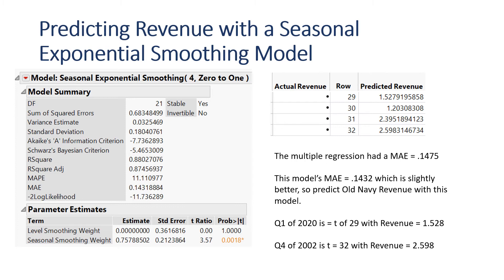Now let's try using a time series function in JMP, found under specialized modeling, called seasonal exponential smoothing. It's easy to remember — it was seasonal data, so we choose the seasonal command. The MAE here is 0.1431. When I compare that to the previous model, this one is better.